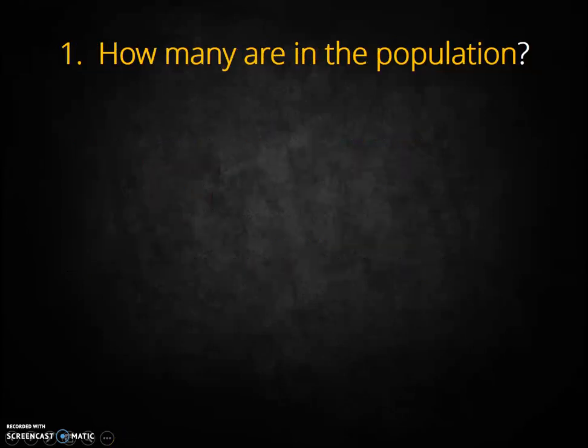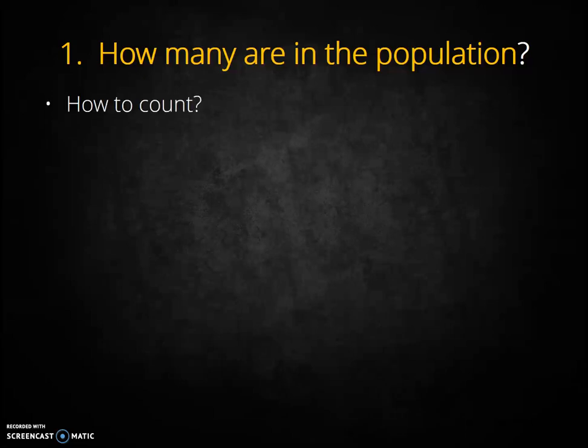How many are in the population seems like a very basic question. For some species it may be easy to answer, but for others this simple question can be quite difficult. Consider migratory fish or birds, or species that are nocturnal, or species with a very large range. How do you count these? Population ecologists use a number of surveying techniques to try to calculate accurate numbers.